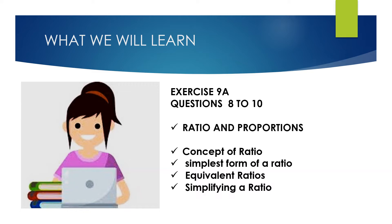Today we will learn and solve exercise 9A, questions 1 to 10 of chapter 9. The chapter name is Ratio, Proportion and Unitary Method, and the topics covered are: concept of ratio, simplest form of a ratio, equivalent ratios, and simplifying ratios. Let's solve some questions.